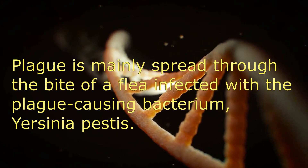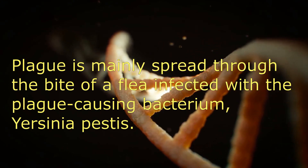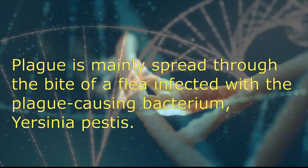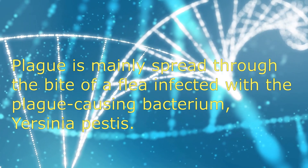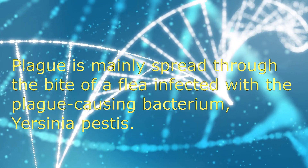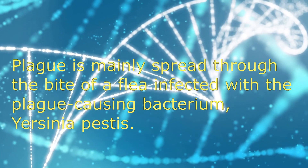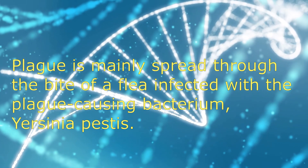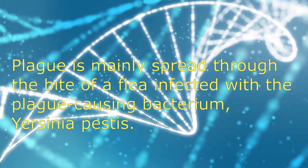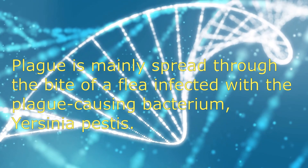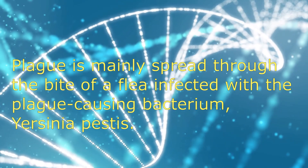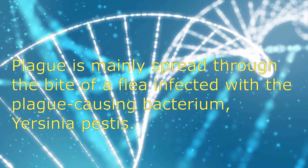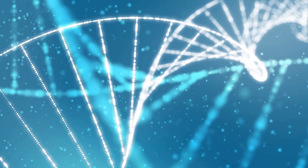Plague is mainly spread through the bite of a flea infected with the plague-causing bacterium Yersinia pestis. Fleas typically live on small animals such as rats, gerbils, marmots, and squirrels, and periodically, explosive outbreaks of plague occur among these susceptible hosts.